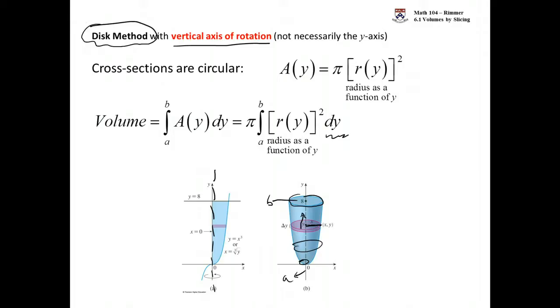Your job is to find this formula for the radius. Once you find it, you just integrate it. Not exactly it. You integrate the square of it. And don't forget about pi. So that's disk method. It's pretty straightforward. And washer is just going to be disk minus another disk. Let's flip to washer.